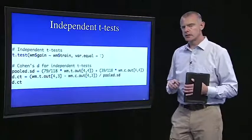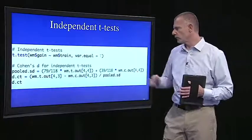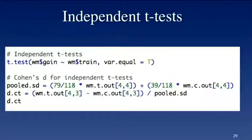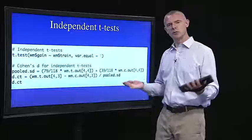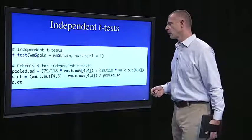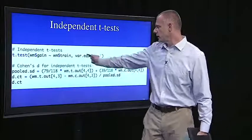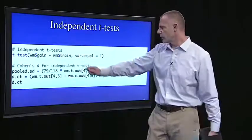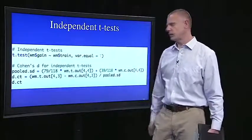And then here's the code for Cohen's D. Remember, you have to get the standard error of the difference. And that requires doing pooled variance or pooled standard deviation.